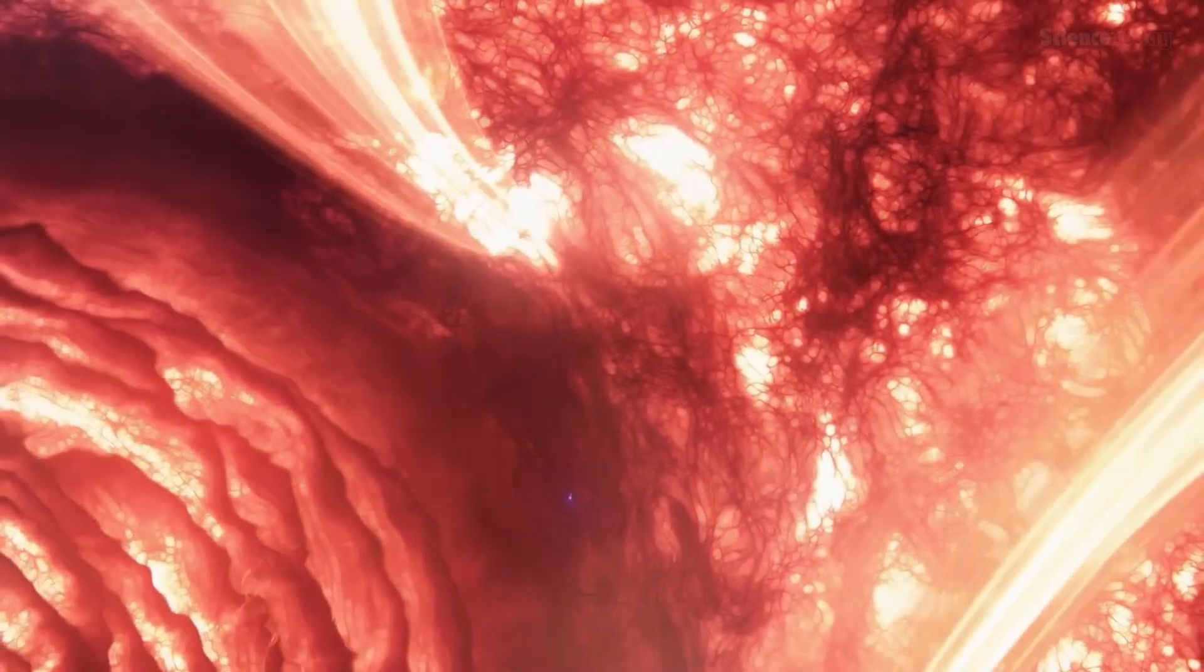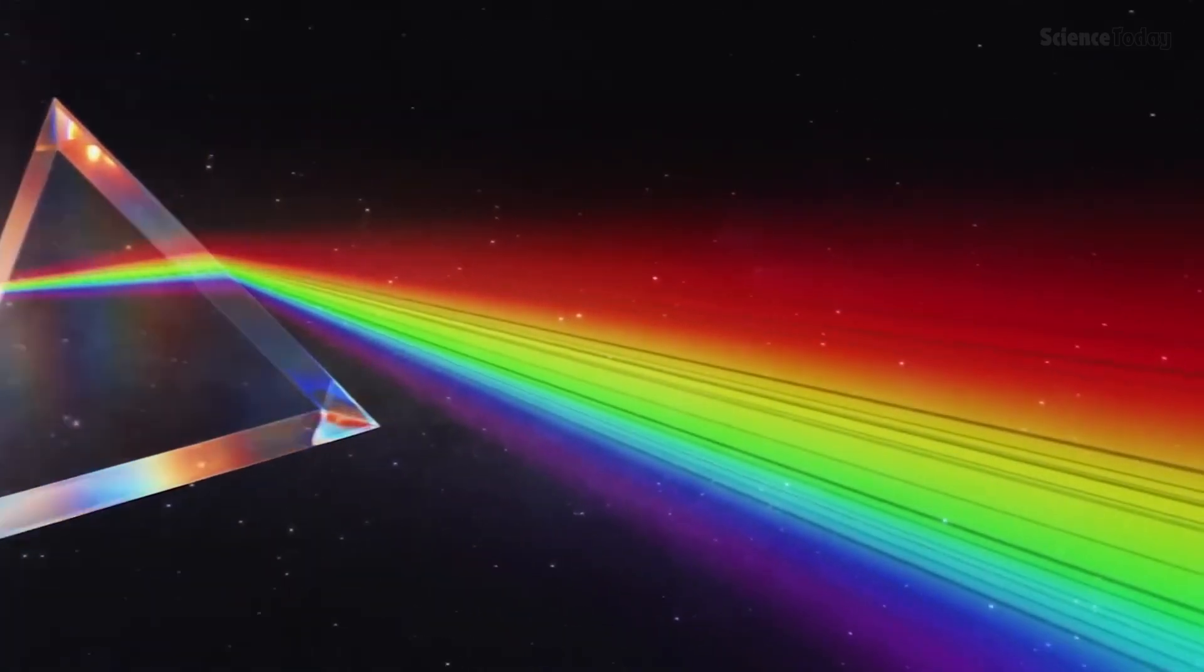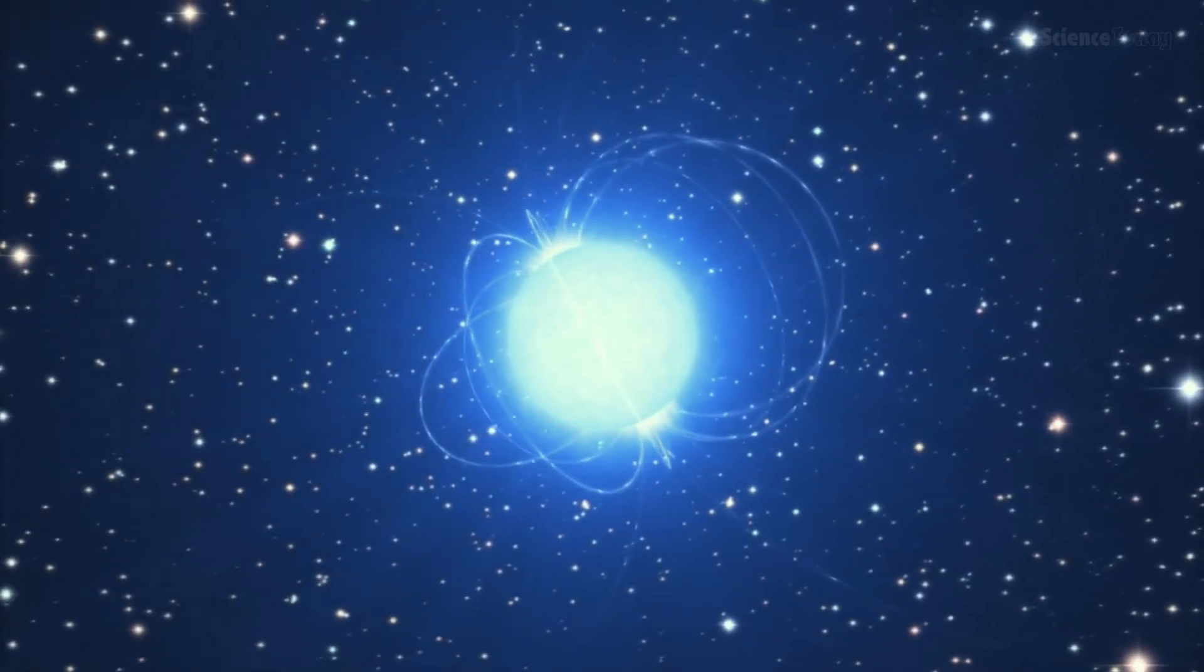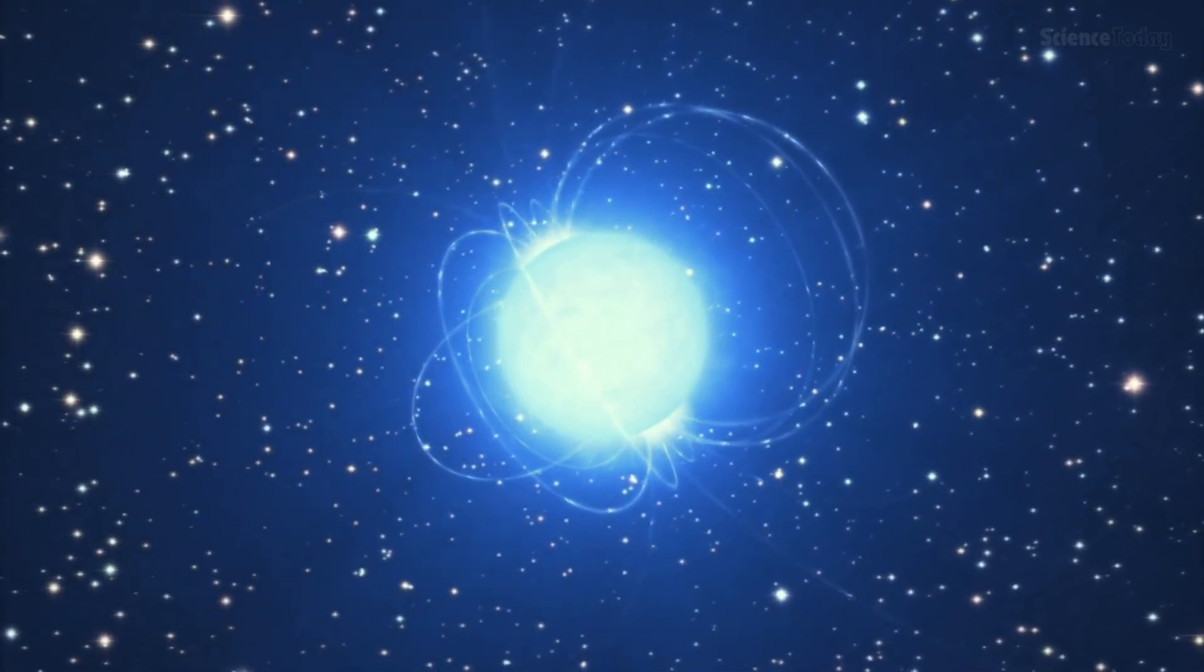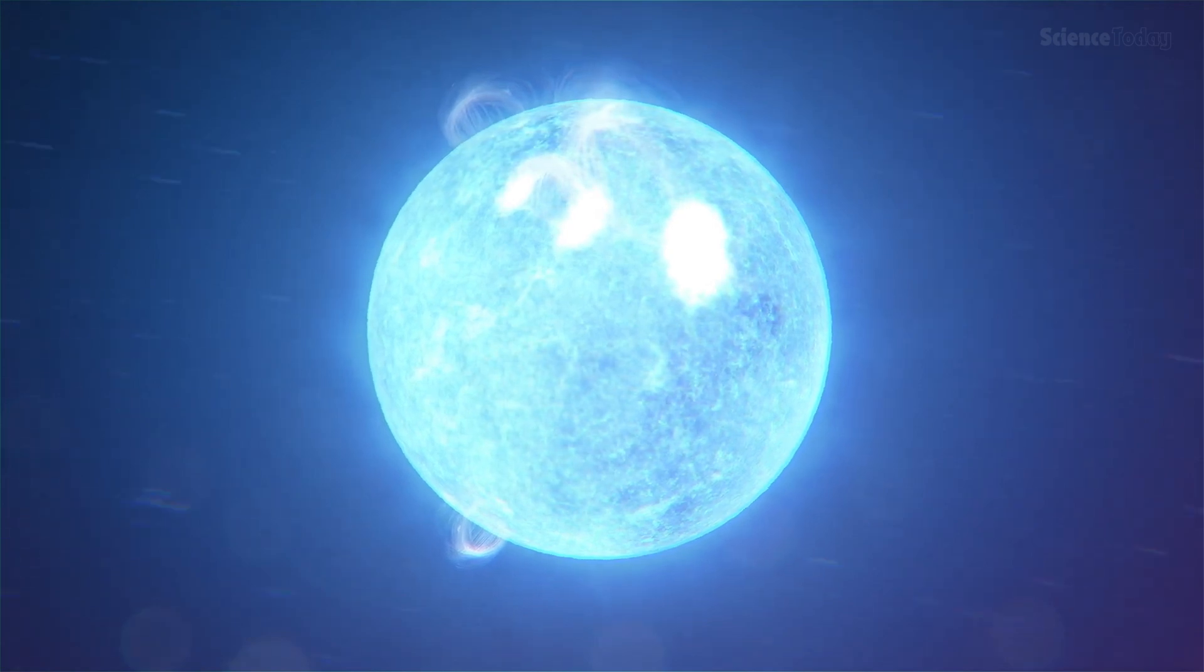At first glance, Przybylski's star doesn't look much different from other stars. It's slightly hotter than our sun, emits light across the spectrum, and has a relatively strong magnetic field. But one peculiar feature stands out.